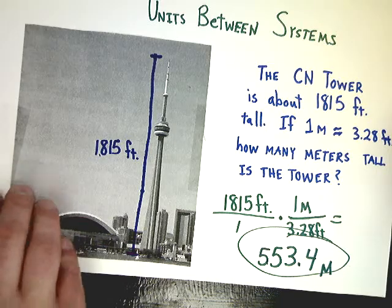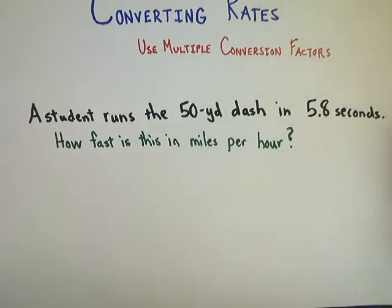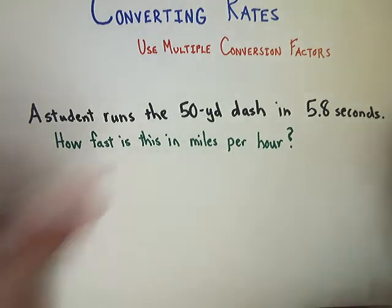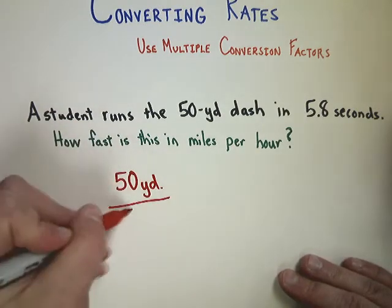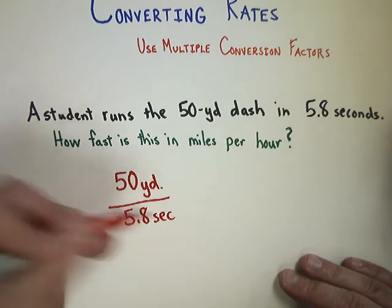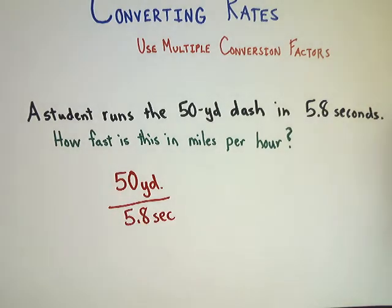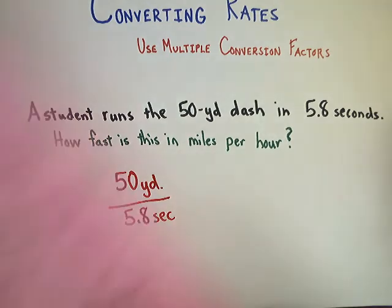The last thing we need to do is talk about converting rates. When I'm converting rates, as we talked about before, a rate is a ratio where the units are different, all I have to do is use multiple conversion factors and do the same thing I did before. In this case, a student runs the 50-yard dash in 5.8 seconds. How fast is this in miles per hour? So, the student ran 50 yards in 5.8 seconds. Now, I need to find out what the conversion is to turn this into miles per hour. And I can do that using my conversion chart if I want. Let's see.